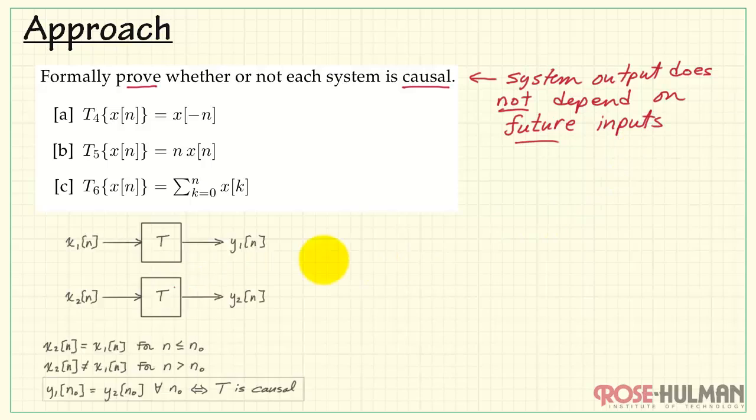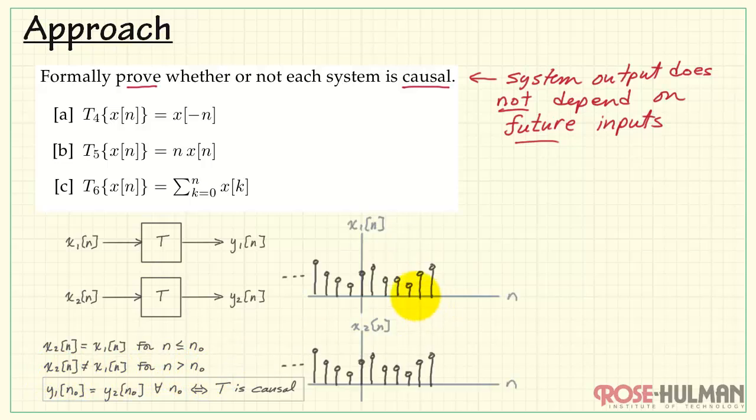Here's a general proof structure that we can use. Let's imagine the same system T is subject to two different inputs, x1 and x2, to produce two different outputs, y1 and y2. x1 and x2 are the same up to a certain time n0 and then are different after that. We can picture it like this. Say we have a signal x1 and x2, which are the same from minus infinity up to the time n equals n0.